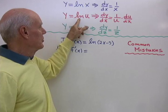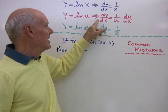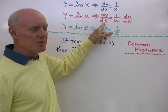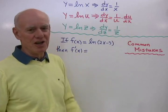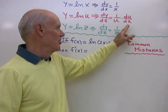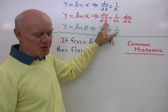But if you have y is equal to log of u, where u itself is a function of x, then the derivative of y with respect to x is 1 over u, that part's the same, but then by the chain rule you have to differentiate u, so du dx. So it all depends on what you're differentiating with respect to.